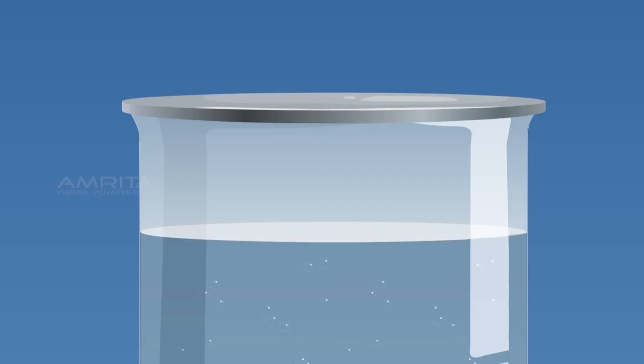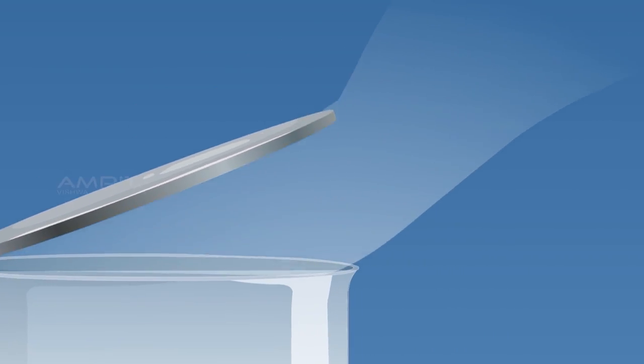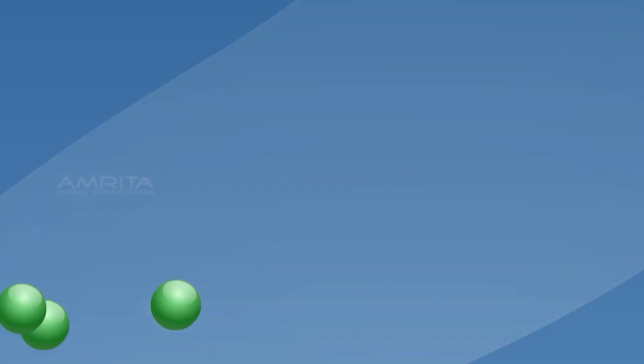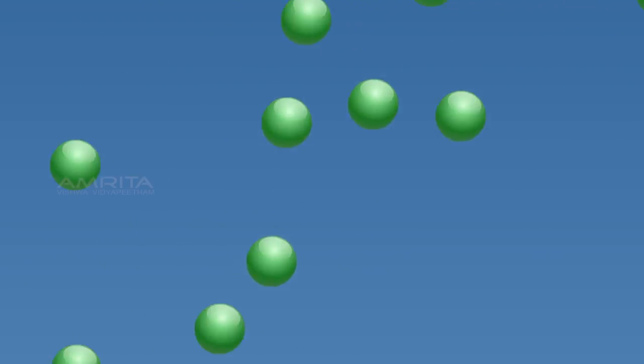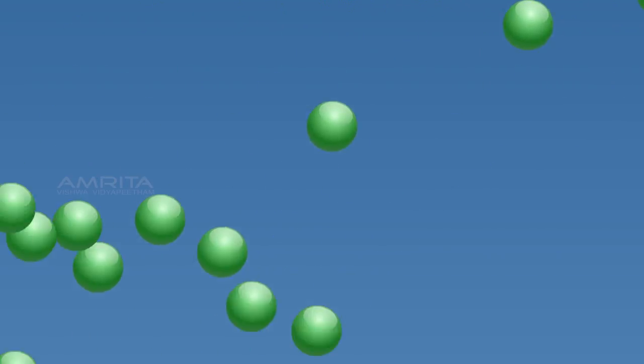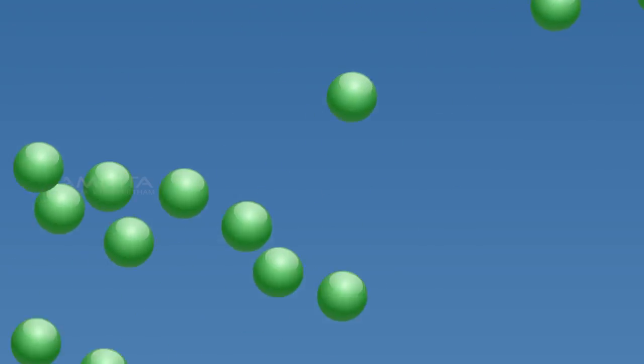Matter in gaseous state has no definite shape and no definite volume. In the gaseous state, the particles are far apart. There is a lot of space between the particles and they move about randomly at high speeds. Due to the huge space between the particles, there is no force of attraction.